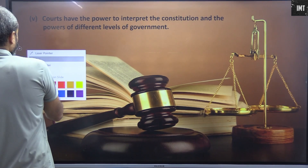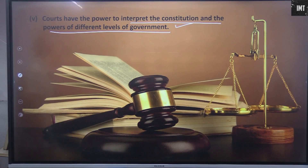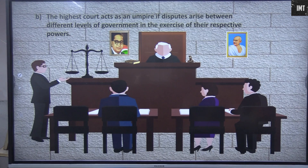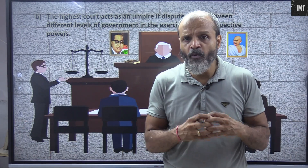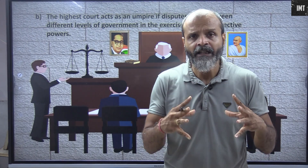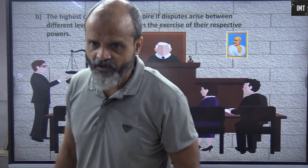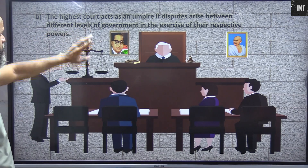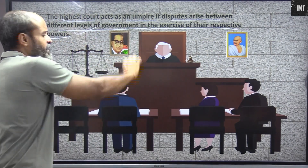Courts have the power to interpret the constitution and the powers of different levels of government. The highest court acts as an umpire if disputes arise between different levels of government. The highest court is the Supreme Court, so the Supreme Court also has authority. The Supreme Court acts as an umpire if disputes arise between different levels of government in the exercise of their respective powers.